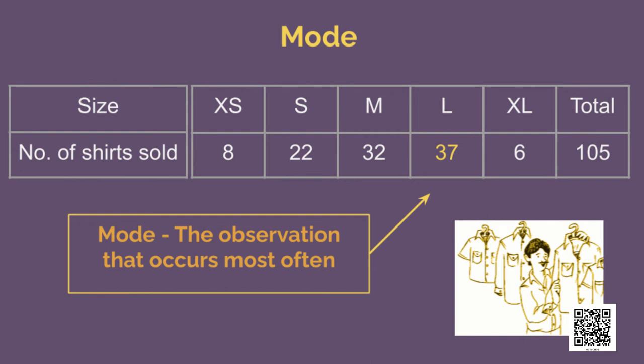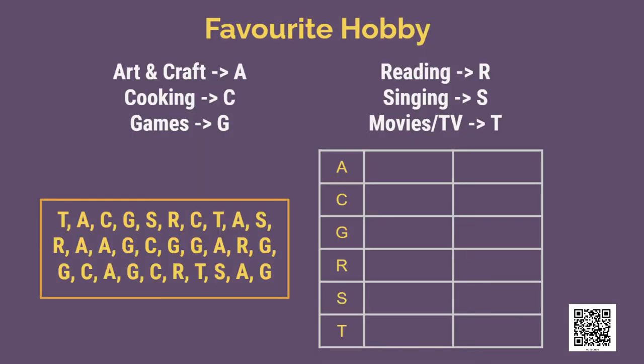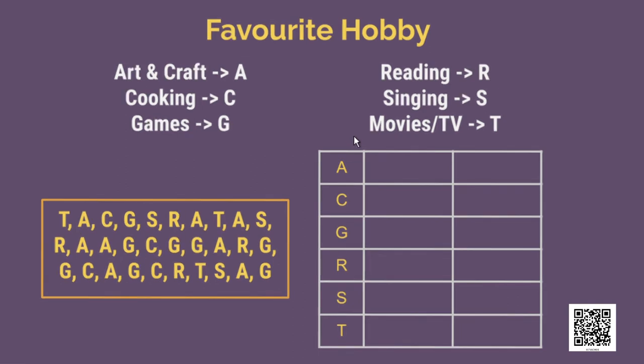Mode is the observation that occurs most often. A survey was conducted in a class of students asking about their favorite hobby and here are their choices. Now, to see how many people like each hobby, we will use the method of tally that you have learnt before.